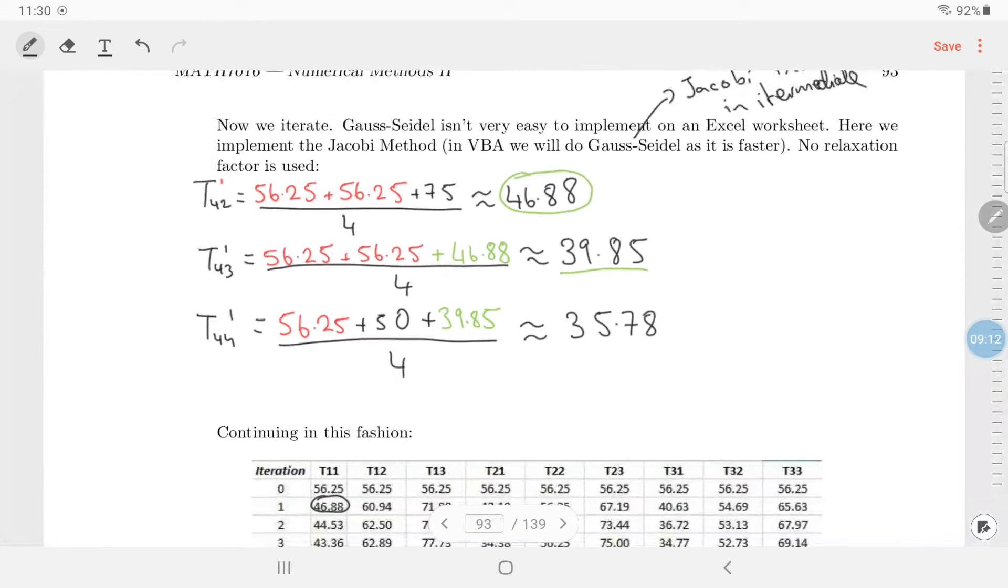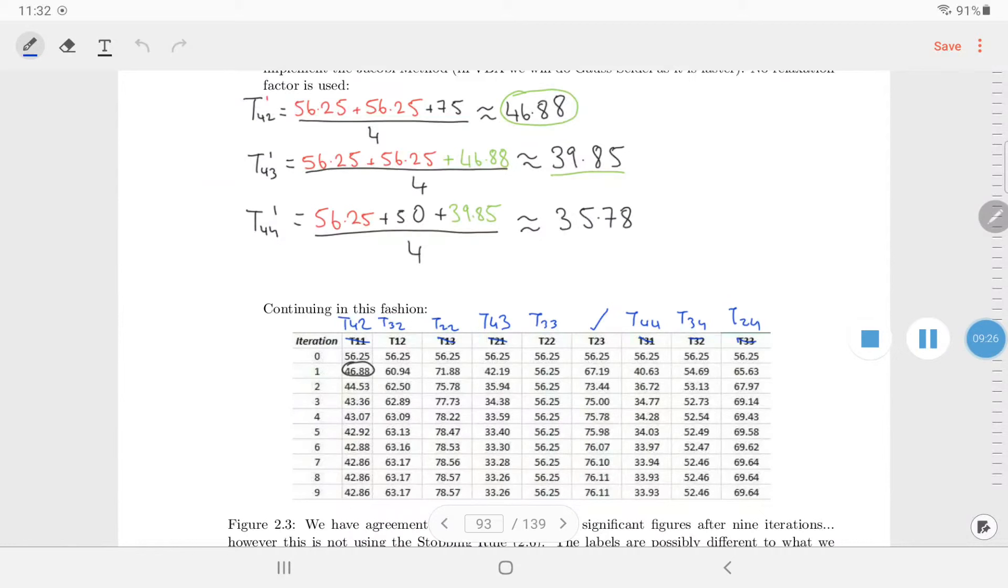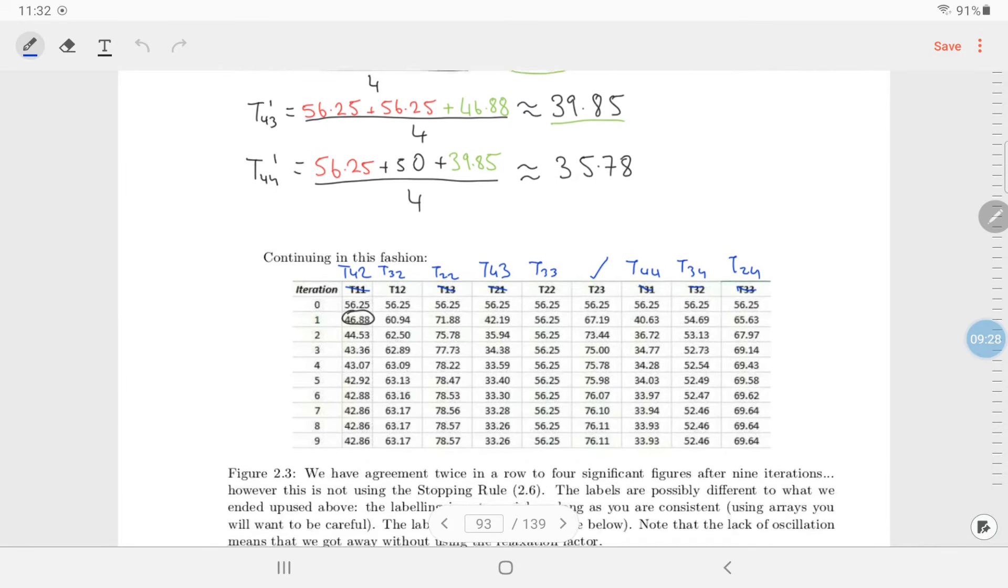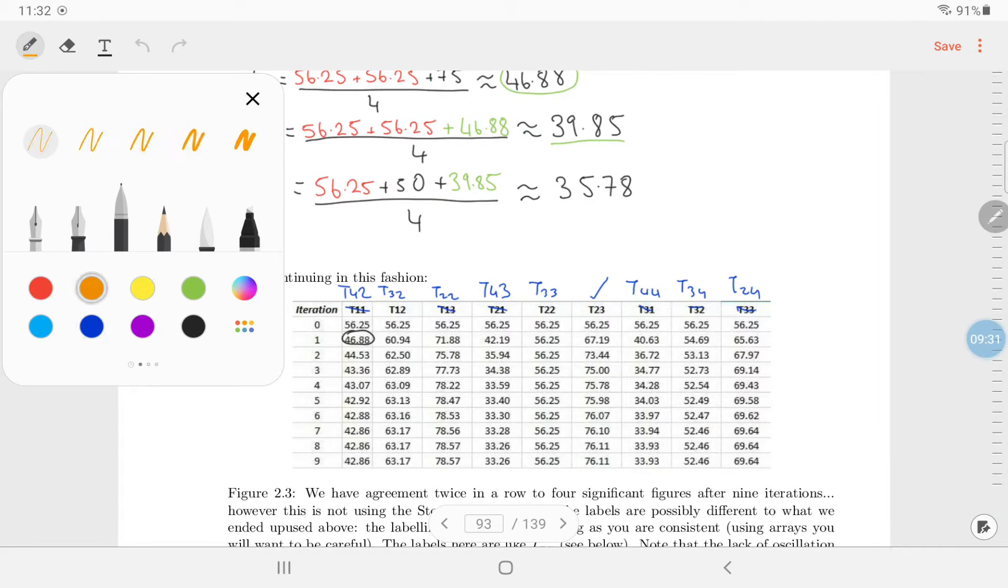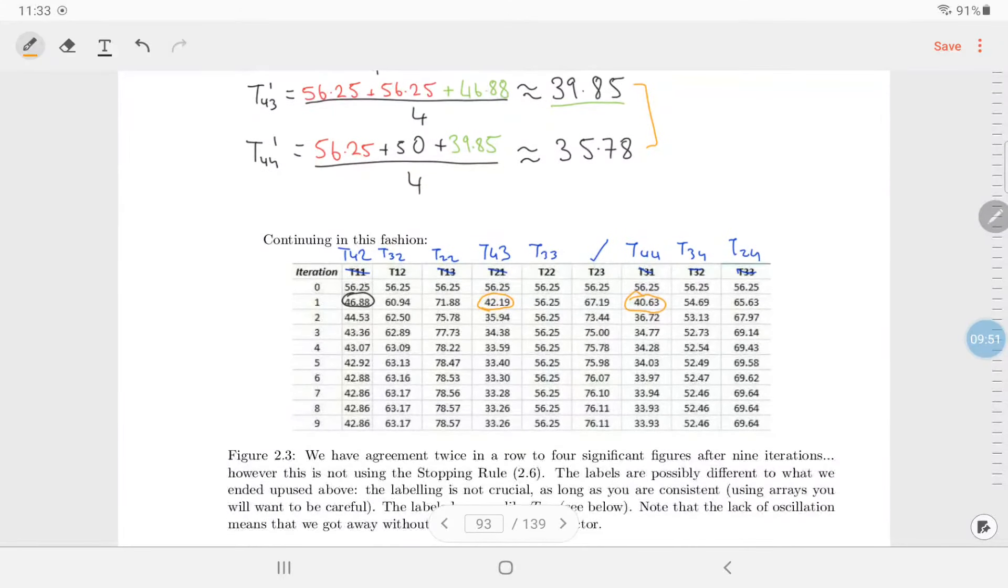First approximation. So T44 is T34, which we don't know anything about yet. So we just must say 56.25 plus 50 plus T43. But the very latest T43 is here. So that's 39.85 divided by four. And we'll approximate this to four significant figures. 56.25 plus 50 plus 39.85 divided by four. I get 35.78. Now there is discrepancies because the order that you calculate them matters. And that really means that these intermediate temperatures don't really mean anything. So, I just try and fix the labeling. I'm going to pause and try and fix the labeling.